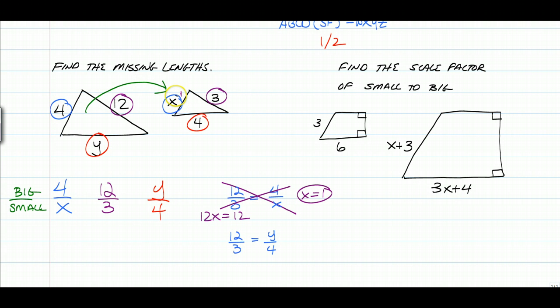And if you think about it this way, we have 4, 1 fourth of that is 1. We look at this guy, 1 fourth of 12 is 3. And then all you have to do is cross-multiply with the other one.